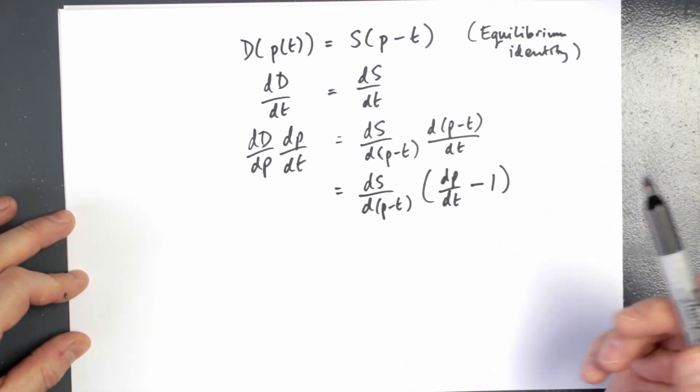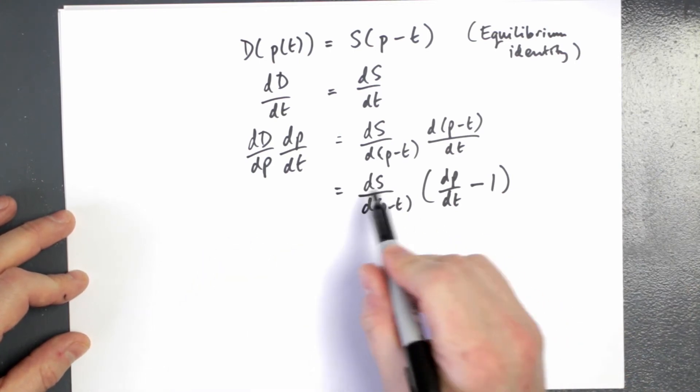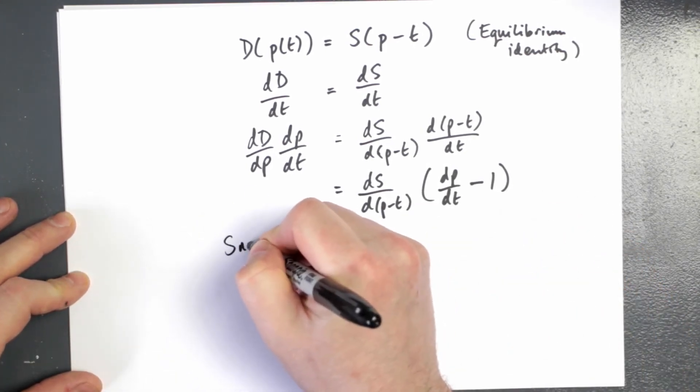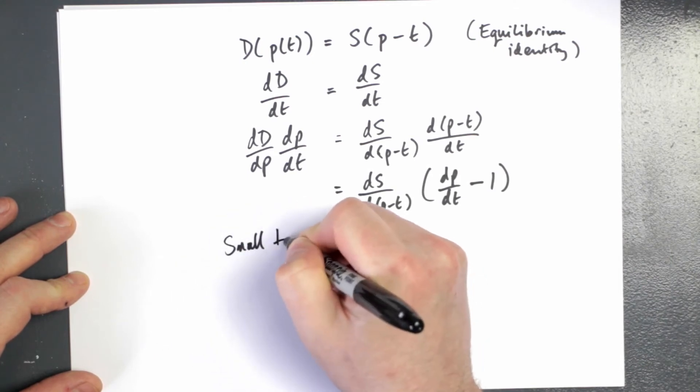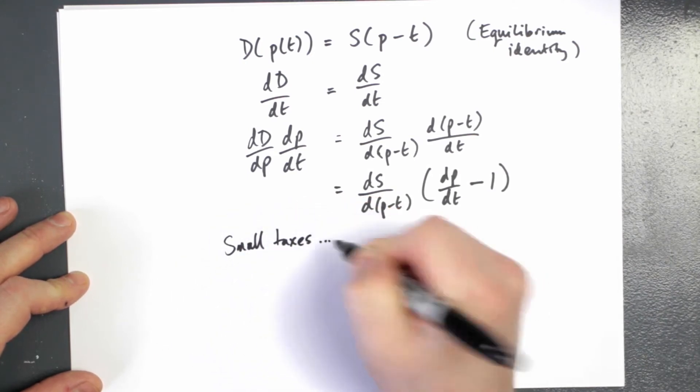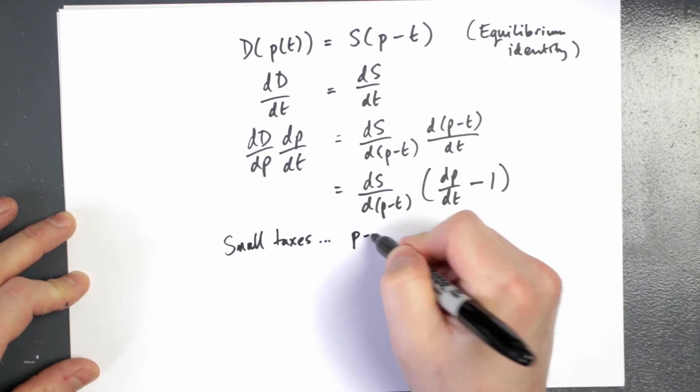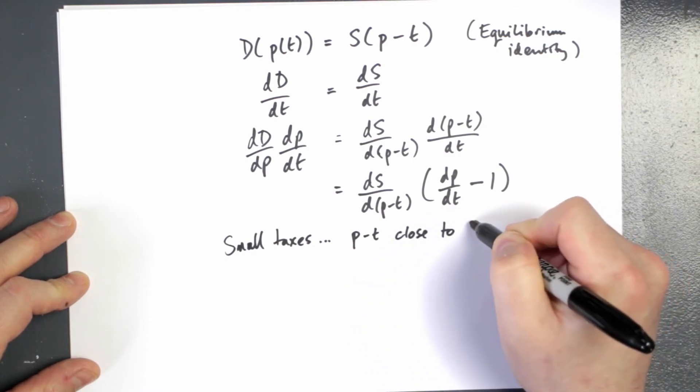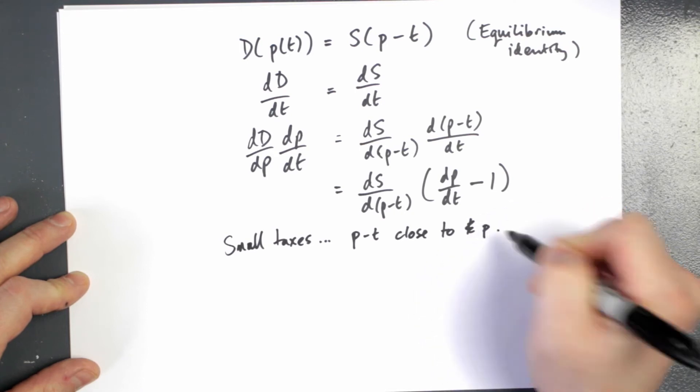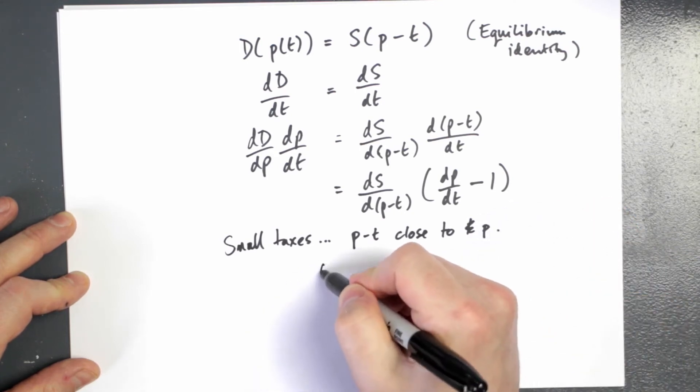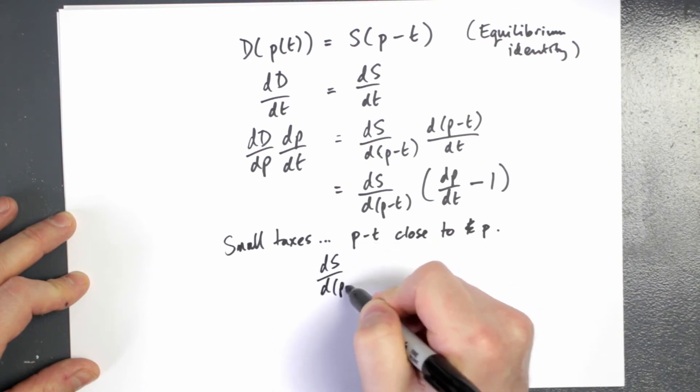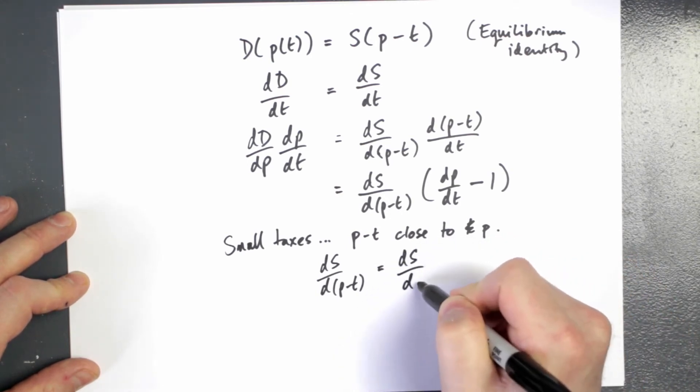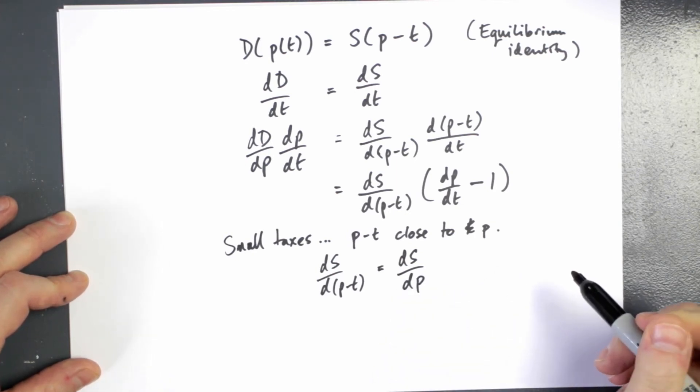Now in the book, this isn't made entirely clear. So I think the easiest way to do the next step is just to say, let's consider small taxes. So we're only going to be talking about small taxes and our equations are only going to be approximately true. So p minus t, if the tax is very small, it's very close to p. In which case we could say, well, for small taxes, this derivative here is approximately equal to this derivative, the derivative of supply with respect to price.